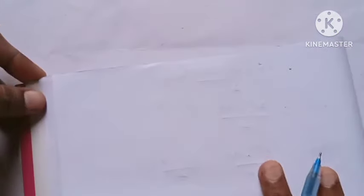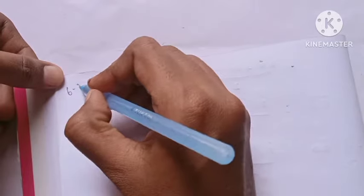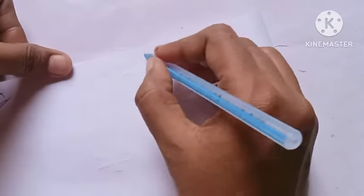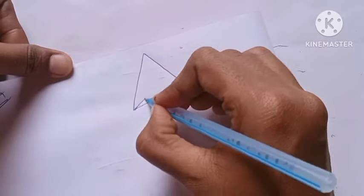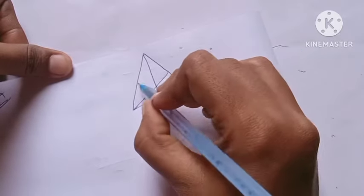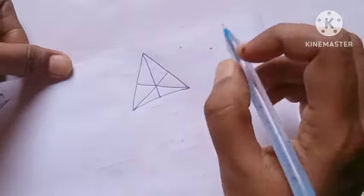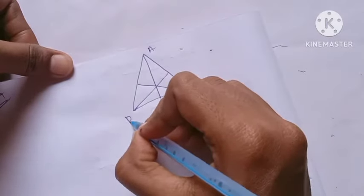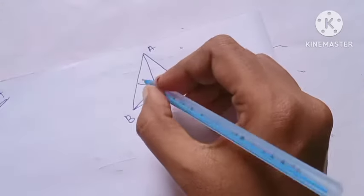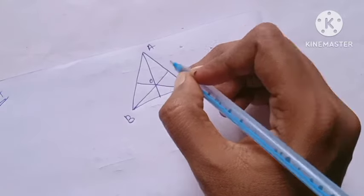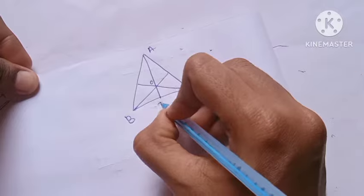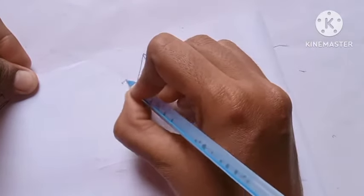So for this triangle concurrency problem, we will first draw the diagram. Mark points A, B, C, with center point O, and midpoints D, E, F.